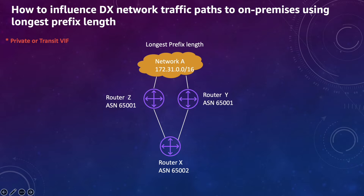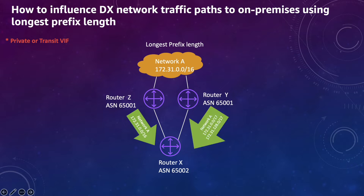Let's talk about how you can use the longest prefix length. Here I have two traffic paths from network A to router X — one through router Z and one through router Y. For router Z I'm announcing the CIDR range with a /16, but when announcing from router Y I'm splitting it into two: /16 and 120.0/17. So traffic going from router X to network A will take router Y as the primary path because of the longer prefix.